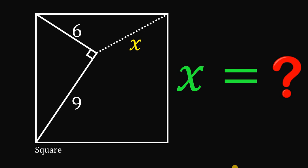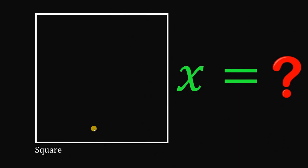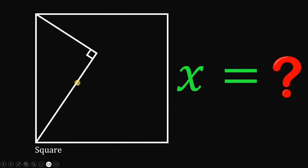Can you solve this geometry challenge? Here's the question: using this square, draw a right triangle inside of it wherein the hypotenuse is the side length of the square, with the legs equal to 6 and 9 units.